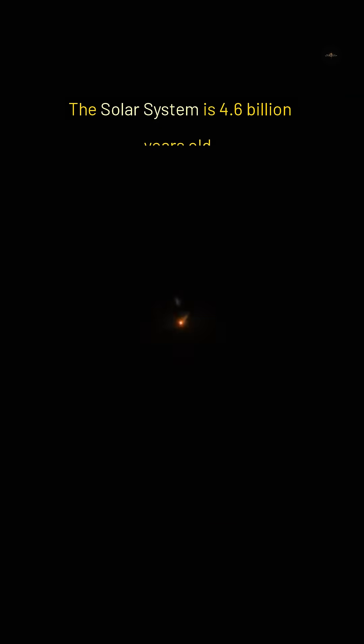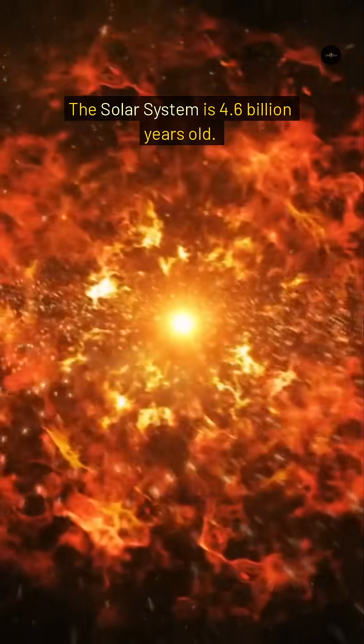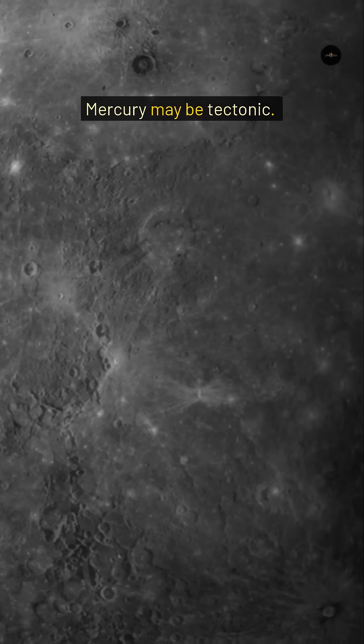The solar system is 4.6 billion years old. Mercury may be tectonic.